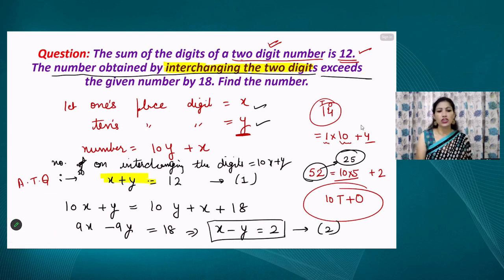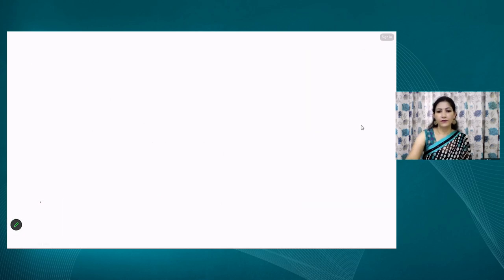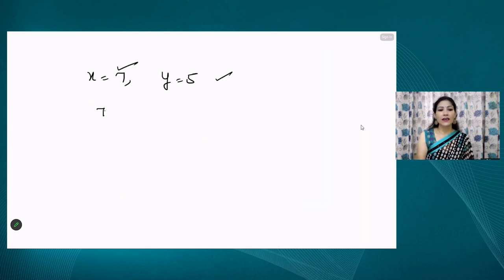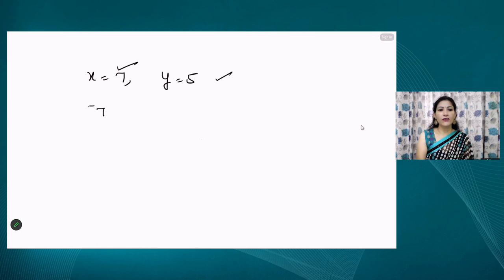We now have x + y = 12 and x − y = 2. Solving these two equations gives x = 7 and y = 5. Since the tens-place digit is y = 5 and the ones-place digit is x = 7, the original number is 57. Remember: you need to write the actual number, not just the individual digit values.